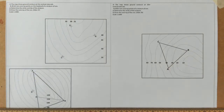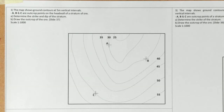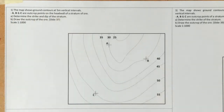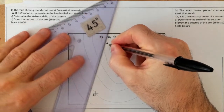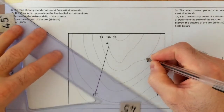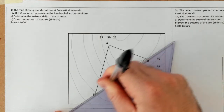For question number one, it states the map shows ground contours at five metre vertical intervals. A, B and C are outcrop points on the headwall of a stratum of ore — the top surface of that ore. Part A: determine the strike and dip of the stratum. Part B: draw the outcrop of the ore. So what we want to do is join the points A, B and C in our plan view, helping us create a triangular plane surface.